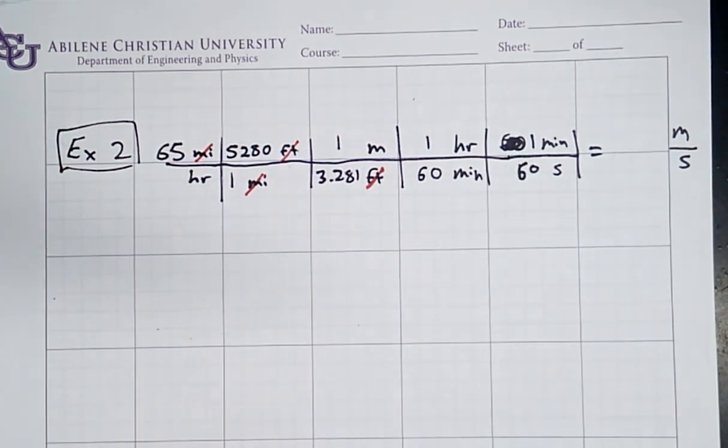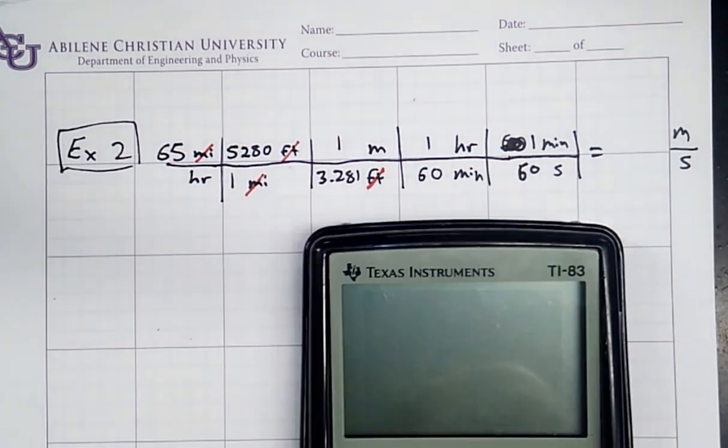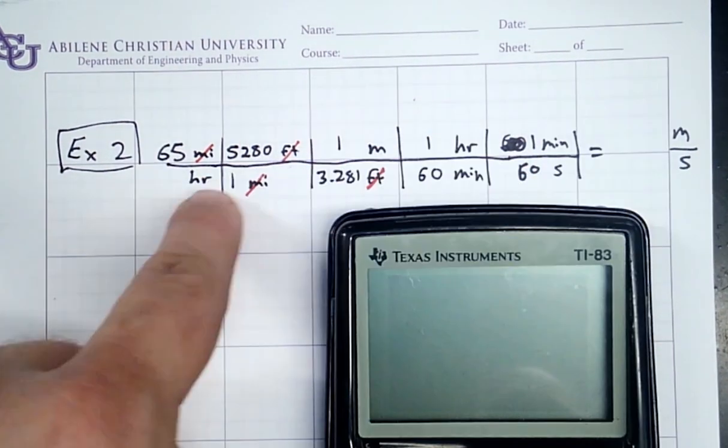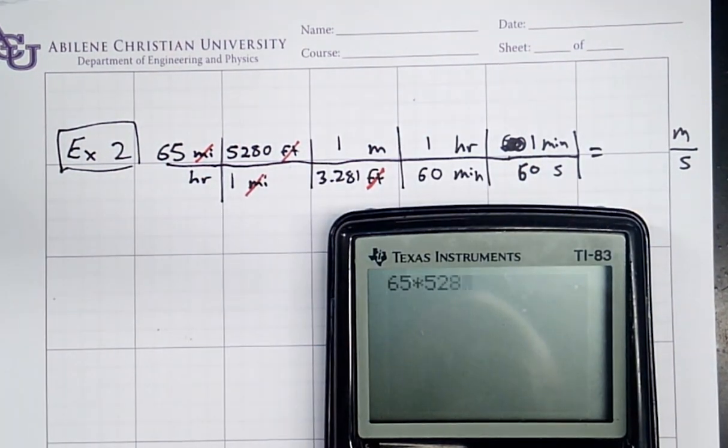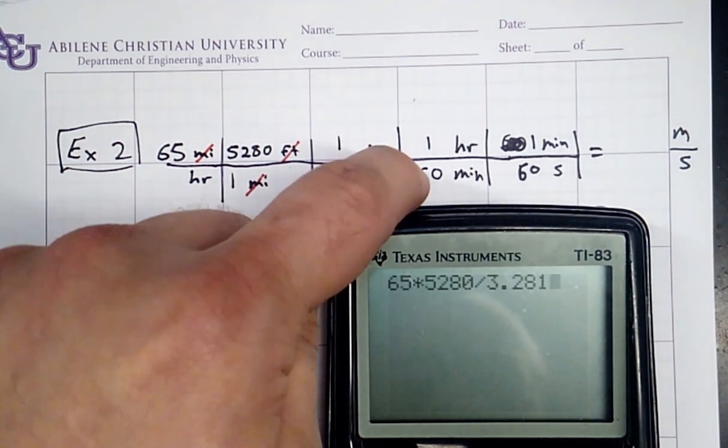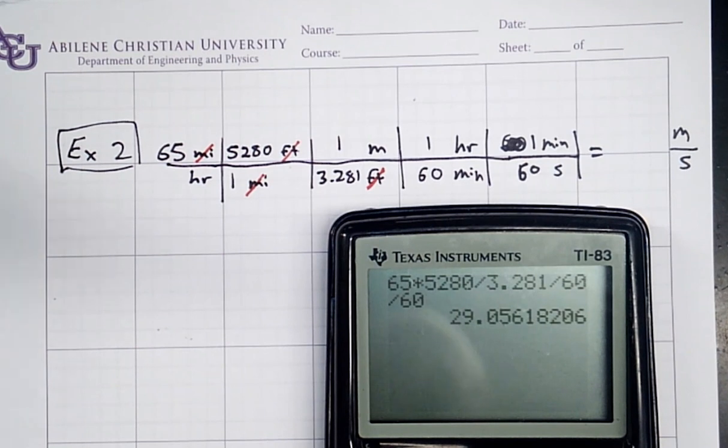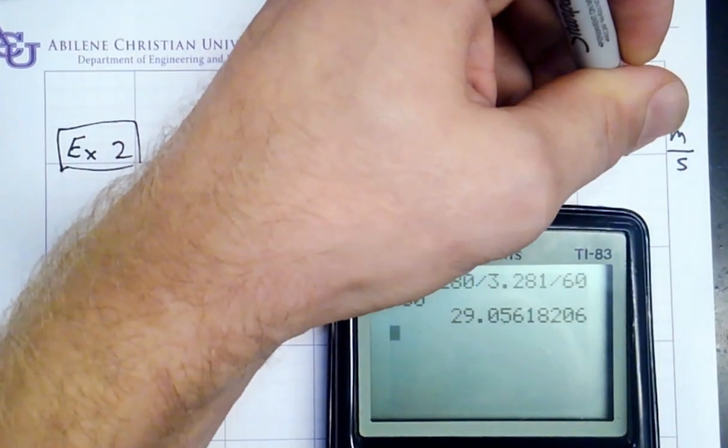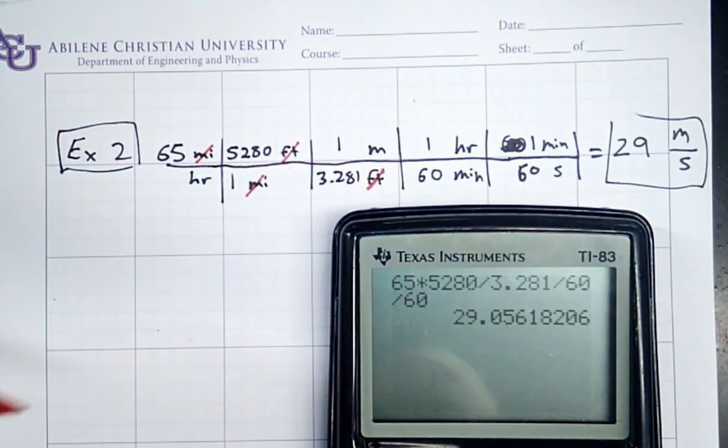Nice thing about writing your work down like this is that when you make a mistake, it's really easy to see it and check. I multiply by everything in the numerator, divide by everything downstairs. I'm going to do 65 times 5,280, divided by 3.281, divided by 60, divided by 60. And what I get is 29 meters per second. Draw a box around that and call it good.